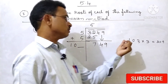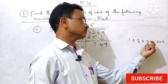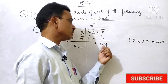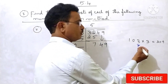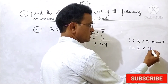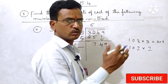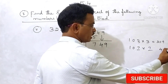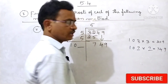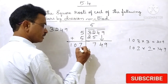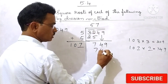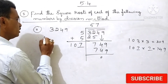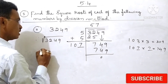9 is there in the unit place. So we check 103×3: 3×3=9, 3×0=0, 3×1=3, giving 309. We want 749, so one more step — take 7. 7×7=49, so 9 in the unit place. So 107×7: 7×7=49, 7×1=7, giving 749. That equals 749. Remainder is 0. So the answer is 57. Therefore, the square root of 3249 is 57.